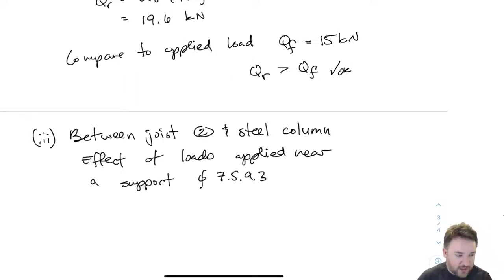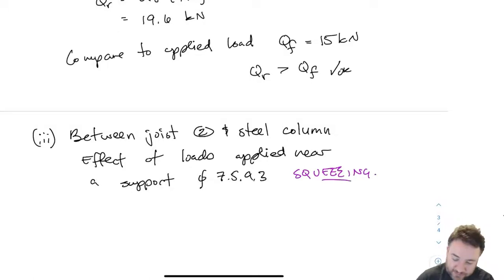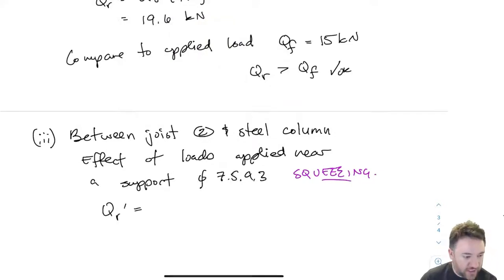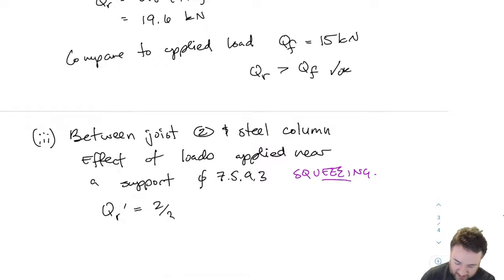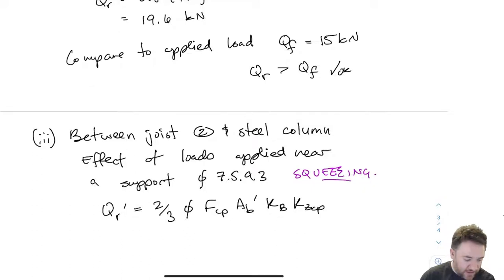For the effect of loads applied near a support — the squeezing resistance case — the equation is slightly different. Since the load goes all the way through the member and we get larger deformation at the surface for the same amount of stress, we apply a factor of two-thirds to reduce the apparent strength. The rest of the equation is largely the same, except I now have AB prime instead of AB, which accounts for the fact that I now have two bearing surfaces instead of one.